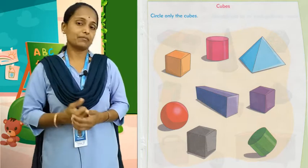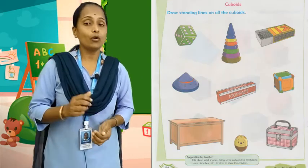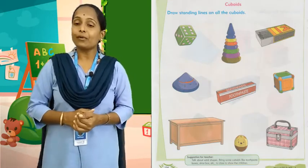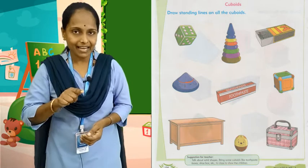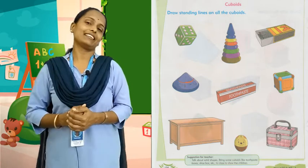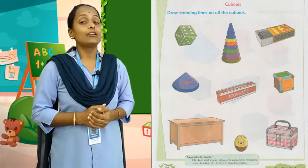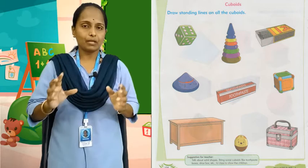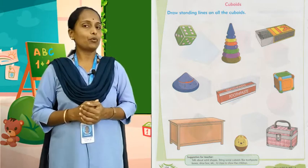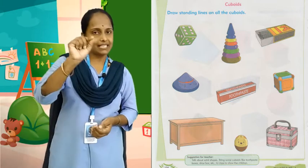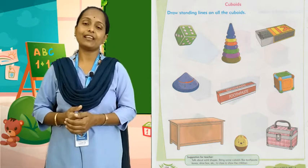वैसे ही, next page में देखो — cuboids है. आपको क्या करना है वहाँ पर? Draw a standing line. जहाँ पर भी cuboids है, उसे आपको क्या करना है? नीचे standing line डालना है.